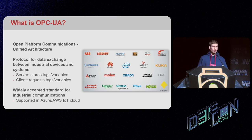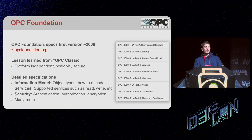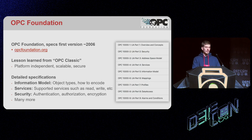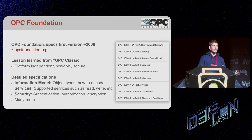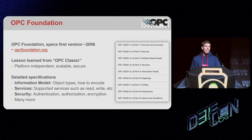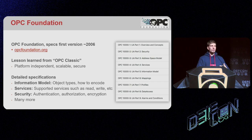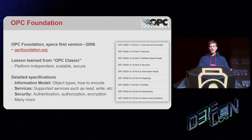OPC UA was created by OPC Foundation and the first specs go back to 2006. It was created based on lessons learned from OPC Classic (OPC DA) — the previous protocol lacked platform independence (it was very tied to Windows), was not scalable, and was not secure. OPC Foundation created OPC UA with very thorough, deep specifications covering how objects are created, how security works, and everything anyone needs to know about implementing OPC UA.